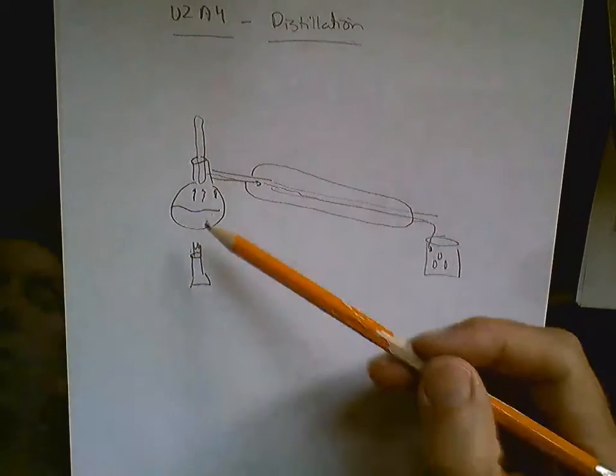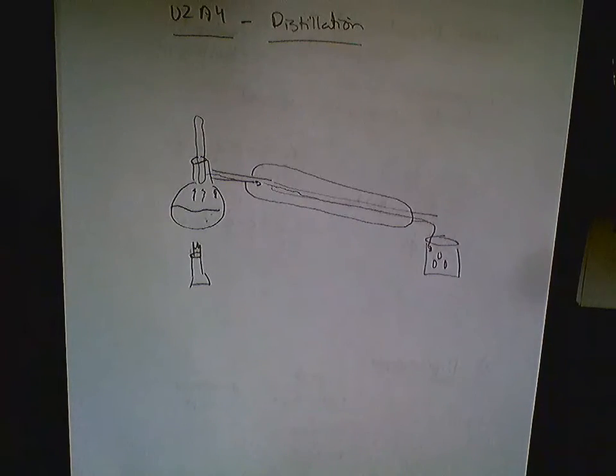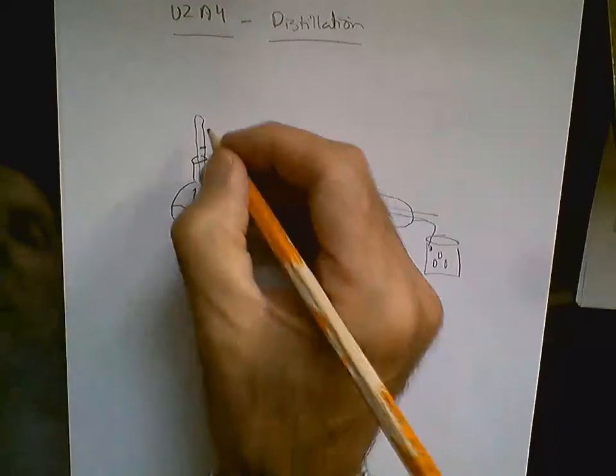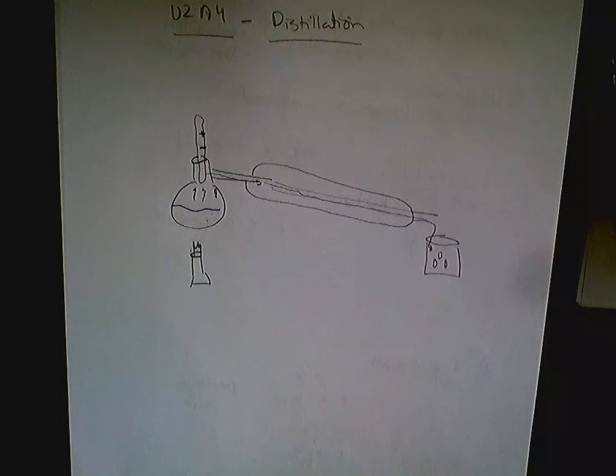What you want to do is take off the methanol first. It boils lower than ethanol. If you have a thermometer, you can see where the methanol is boiling. When the temperature jumps up, you know you're getting ethanol.